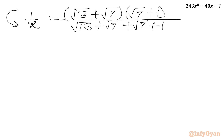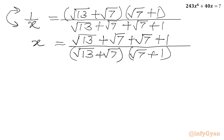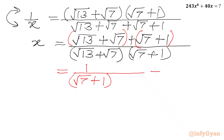Now we will take root 13 plus root 7 common from the numerator. So I will write 1 over x equal to root 13 plus root 7, and in the other bracket we will get root 7 plus 1. In the denominator we write root 13 plus root 7 plus root 7 plus 1. Now consider reciprocal of both sides, we will get x on the LHS. In the RHS we write root 13 plus root 7 plus root 7 plus 1, and the denominator will be root 13 plus root 7 times root 7 plus 1. Now splitting the numerator with respect to the denominator: root 13 plus root 7 cancels, giving 1 over root 7 plus 1; and root 7 plus 1 cancels, giving 1 over root 13 plus root 7.